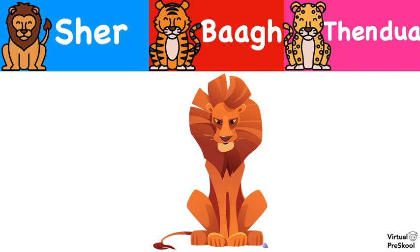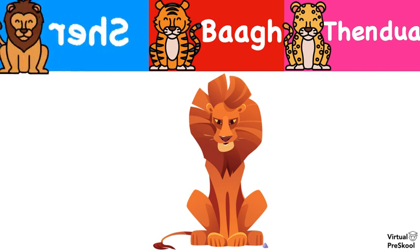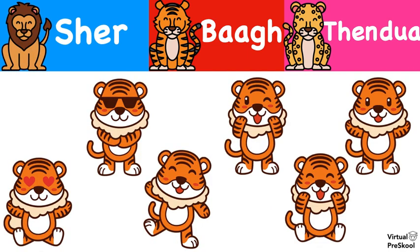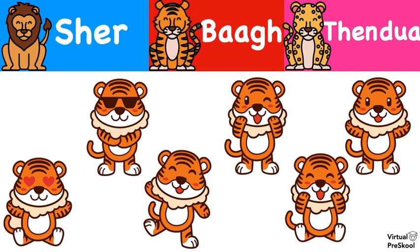What do you see here? Shed, Baag, or Tindua? It's a Shed, a lion. What do you see here? Shed, Baag, or Tindua? We see lots of chote-chote Baags, right? Little, little tigers.